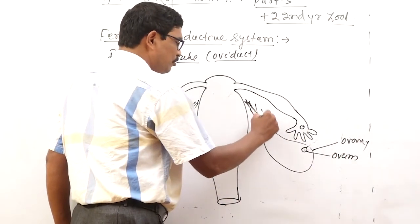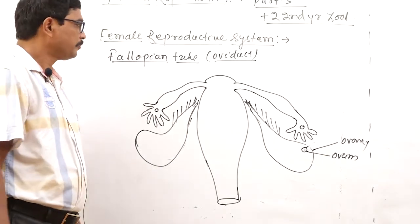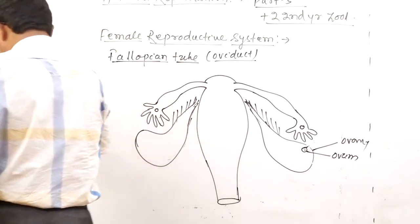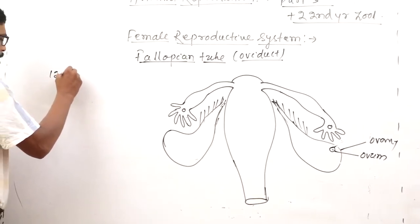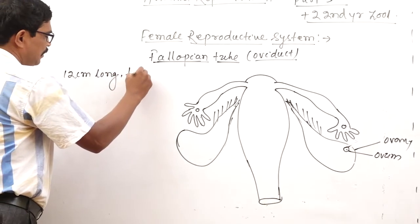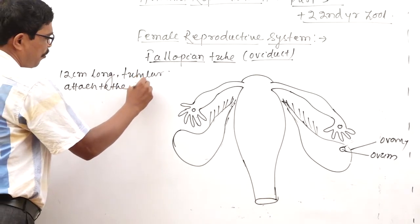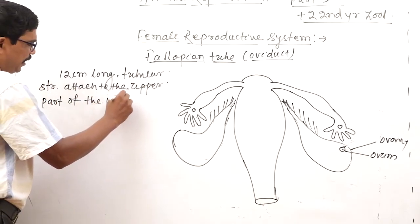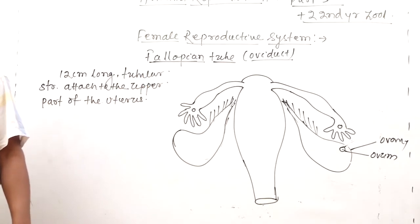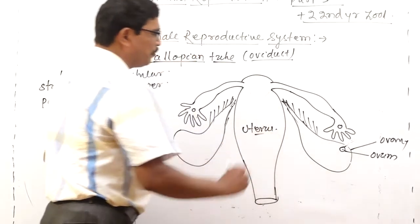This is the ovarian ligaments and mesoovarium. The ovarian ligament is associated with a long slender tubular structure, near about 12 cm long, attached to the upper part of the uterus.